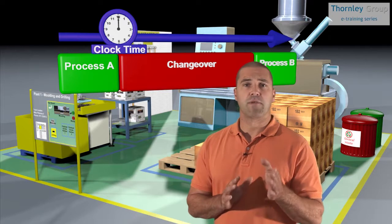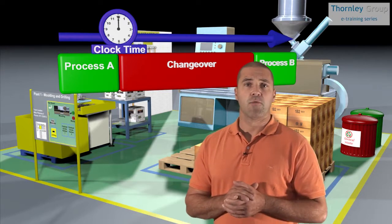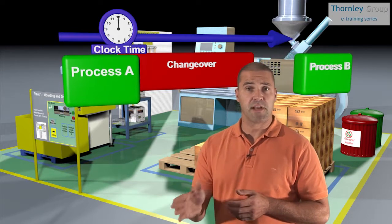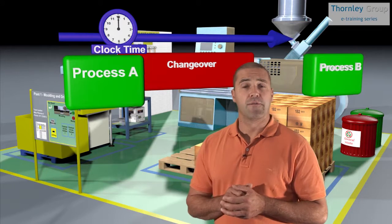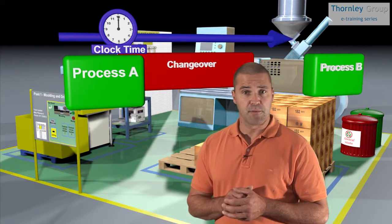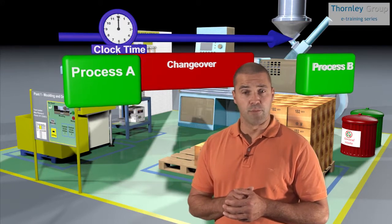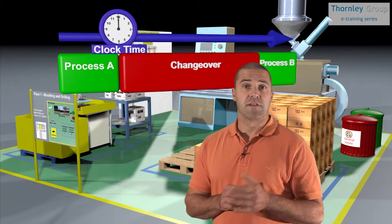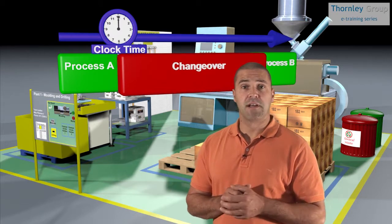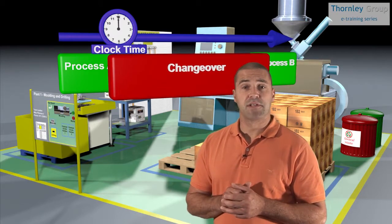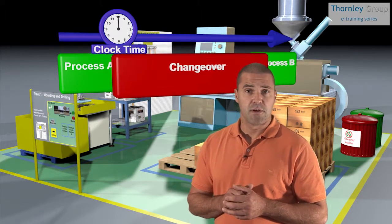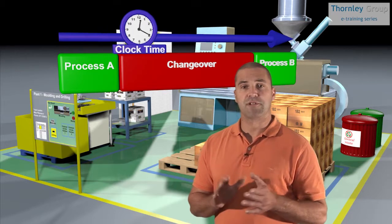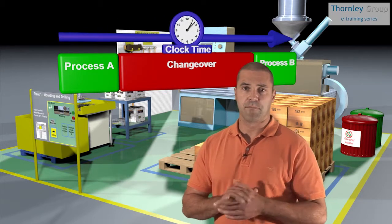The green sections represent the last output from the previous process on the left and the first acceptable output from the new process on the right. The section in red is where the process is stopped. Note that the horizontal axis of this model represents clock time.